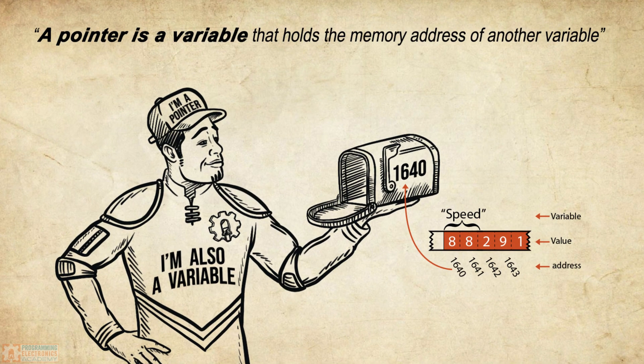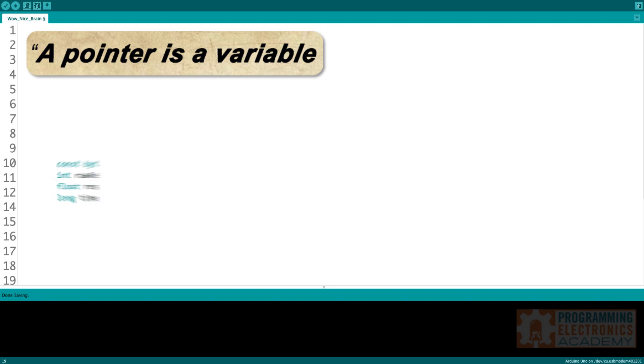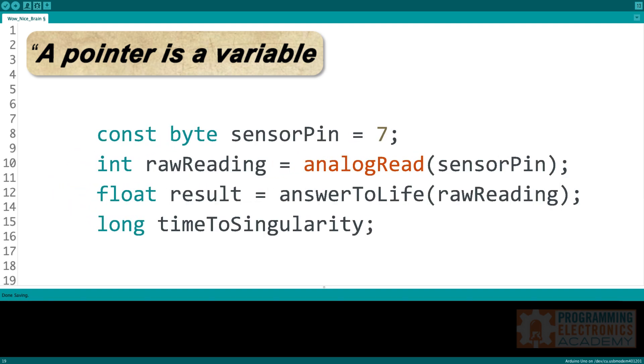The first part says a pointer is a variable. Now, I kind of like this part the best because probably like you, I'm super familiar with variables. In the Arduino programs that I write, I use variables all the time, like constant byte variables for pin numbers or integer variables for different sensor readings or float variables for some type of precise calculation. I mean, the list goes on. Variables are everywhere in my code.